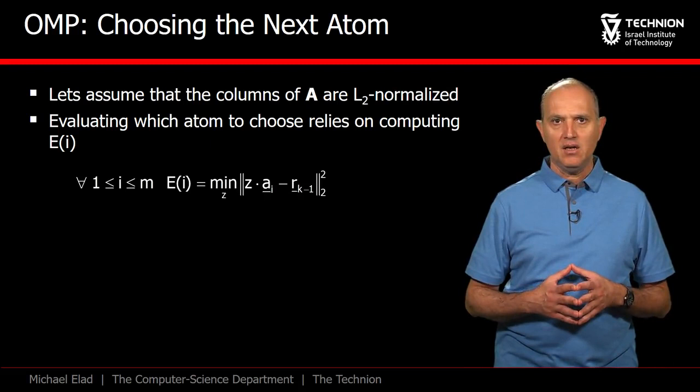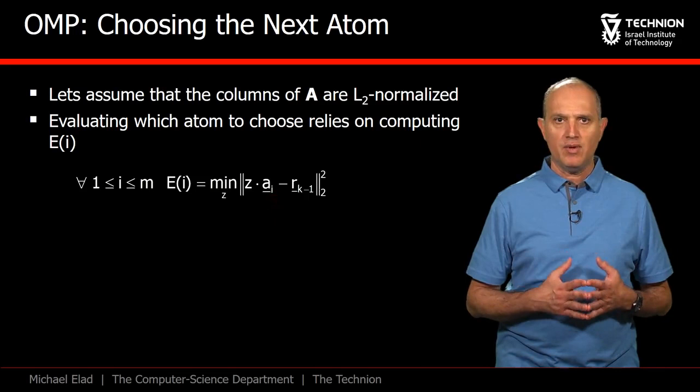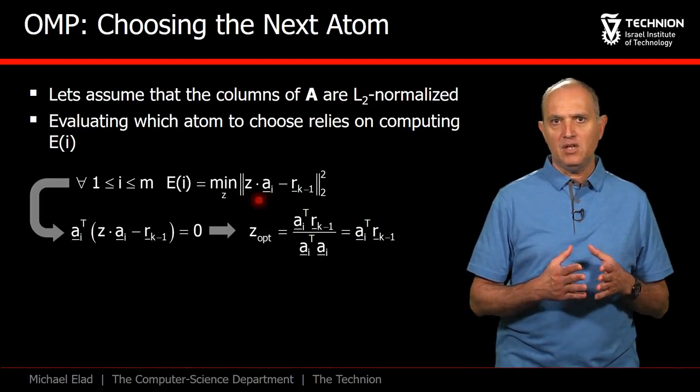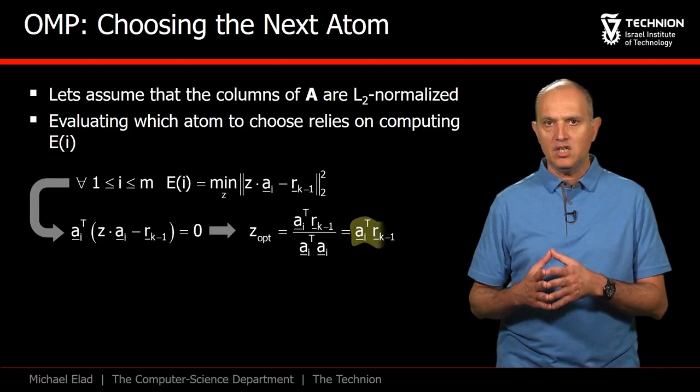Looking closely at the computation of EI, we are optimizing with respect to the scalar z that multiplies the i-th column taken from A. The optimal value of z is given by a simple derivative of this L2 expression.